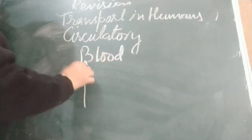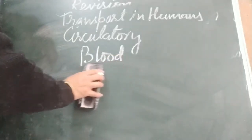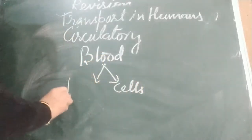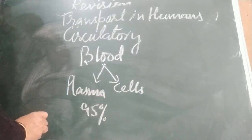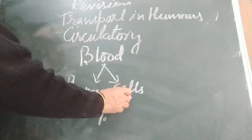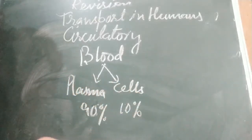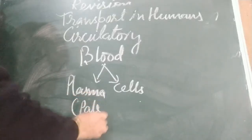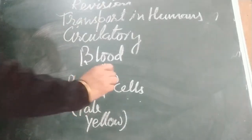Blood has two parts. One part is cells, and the other is plasma. Plasma is a pale yellow liquid. Several cells float in this pale yellow liquid plasma. These cells are of three types.